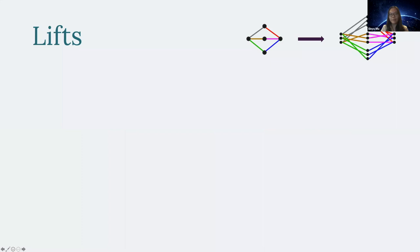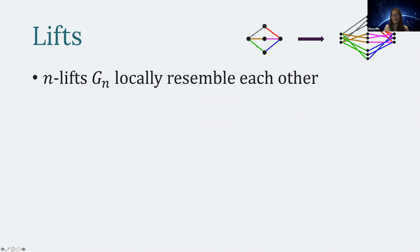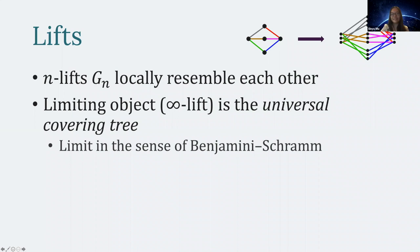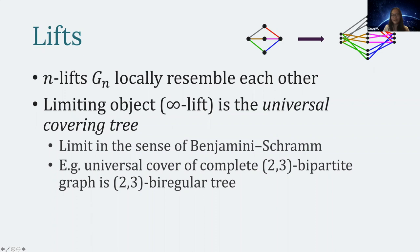All N-lifts locally resemble each other and they locally resemble the original base graph. There's a limiting object called the universal covering tree, which is the infinity lift — an infinite tree that all the finite lifts locally resemble. Technically this is the limit in the Benjamin-Schramm sense. As an example, if I take this two-three bi-regular graph and take the infinity lift, I get the infinite two-three bi-regular tree.